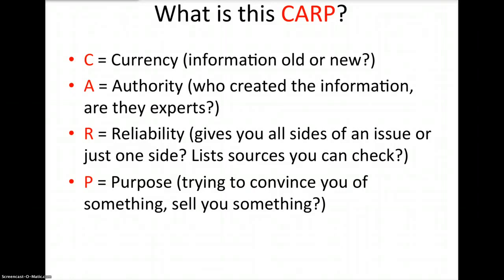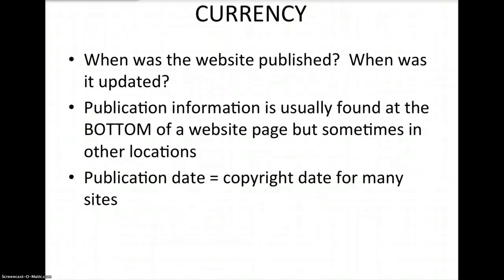Let's look at each of these four tests and see how they can be applied to evaluate websites. Let's start with Currency. Currency is just when was the website published — when was the information created? This publication information is usually found at the bottom of the website page, but sometimes at the top or in the middle. Just remember that publication date and copyright date are the same thing for most websites.